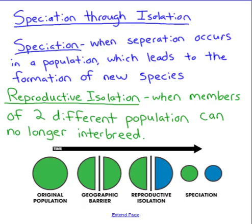This brings us to our final topic: speciation. This is where separation occurs in a population, most likely through disruptive selection, and it leads to the formation of new species. The most important concept here is reproductive isolation — when members of two different populations can no longer interbreed. Reproductive isolation is what leads to speciation: two groups within a population are no longer interbreeding, and this can happen in three ways.